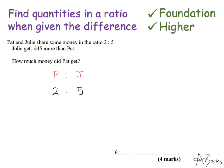Now if you look here, in this ratio the difference between Pat and Julie is 3. In my answer I want the difference between Pat and Julie to be 45 — I want Julie to get 45 more than Pat, not 3 more. So to get from 3 to 45 I need to multiply by 15.